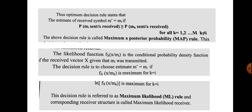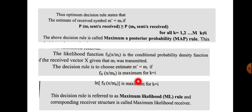The estimate M-hat equals Mi when fx(x | Mk) is maximum for k equal to i. Equivalently, the natural logarithm ln[fx(x | M-hat)] is maximum for k equal to i. This decision rule is referred to as the maximum likelihood rule.